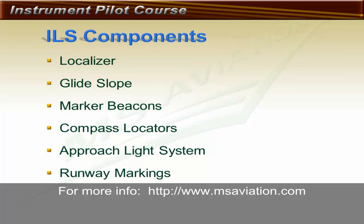An instrument landing system is made up of a localizer and glide slope as the primary navigation aids. Most ILSs will also have marker beacons or compass locators in addition for ranging information. ILS components also include the approach light system and runway markings.